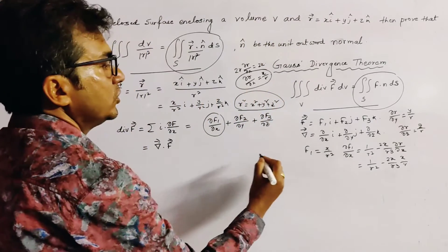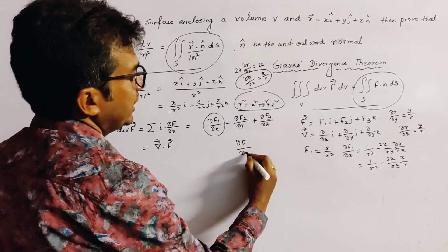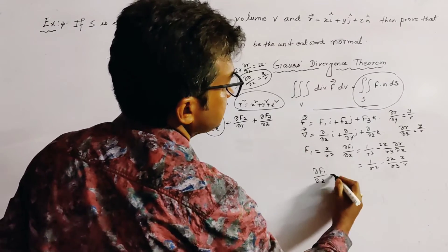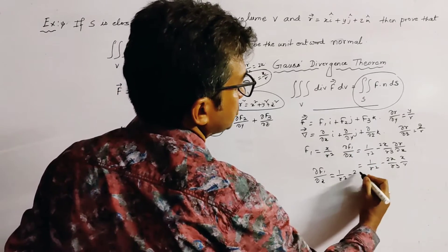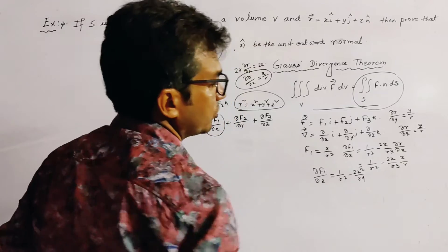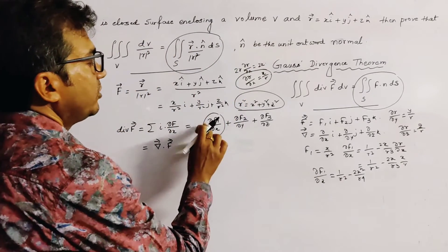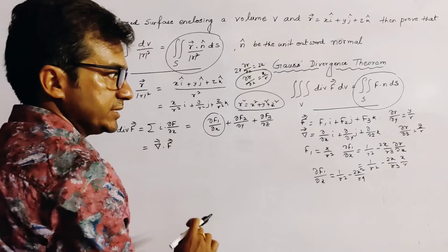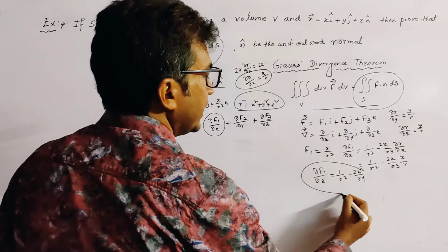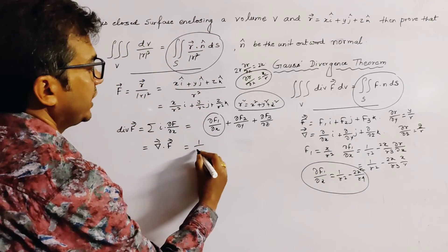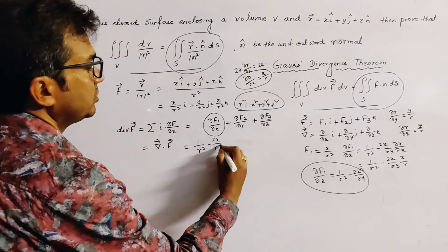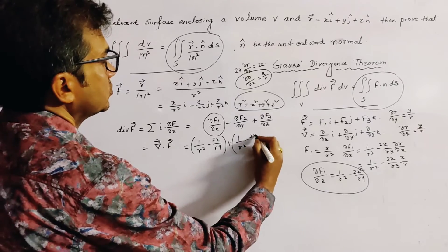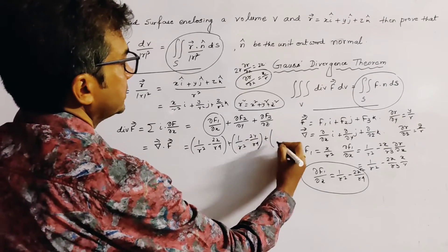Substituting, del(f1)/del(x) = 1/r² − 2x²/r⁴. Similarly, del(f2)/del(y) = 1/r² − 2y²/r⁴, and del(f3)/del(z) = 1/r² − 2z²/r⁴. Adding these three results gives div(F) = 3/r² − (2/r⁴)(x² + y² + z²).